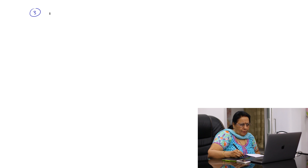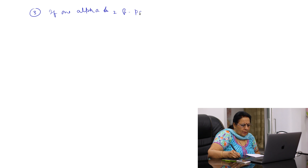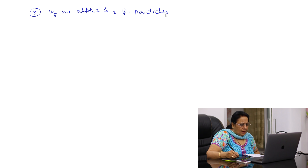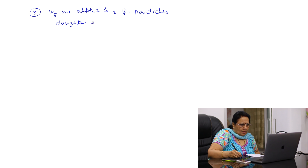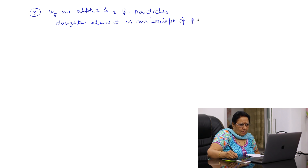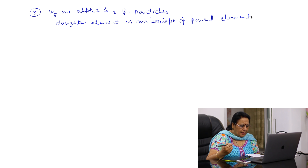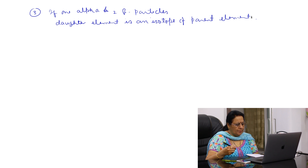The 3rd important point is: if 1 alpha and 2 beta particles are emitted from a radioactive element, then the daughter element is an isotope of the parent element, because the daughter and parent element have the same atomic number.